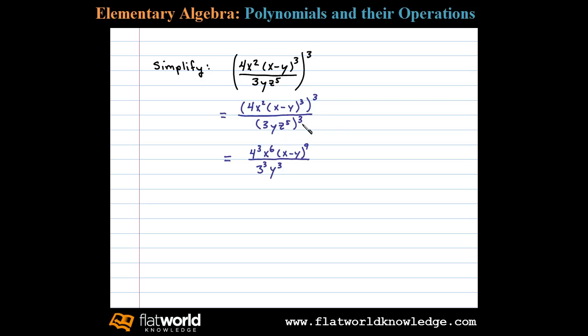and z to the fifth to the third power is z to the 15th power (5 times 3). Now all that's left to do is simplify a bit. 4 to the third is 64, x to the sixth...